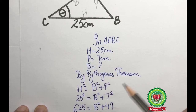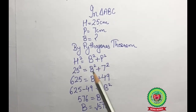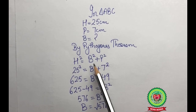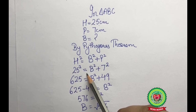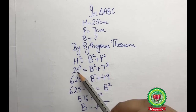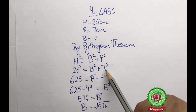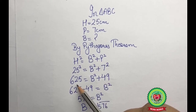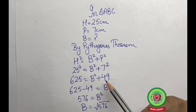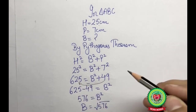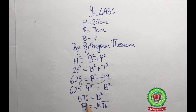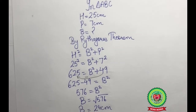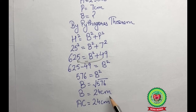In triangle ABC: H = 25 cm, P = 7 cm, and we need to find the base. Applying Pythagoras theorem: H² = B² + P², so 25² = B² + 7². That gives 625 = B² + 49, so B² = 625 − 49 = 576. Taking the square root, B = 24 centimeters. Therefore AC = 24 centimeters.